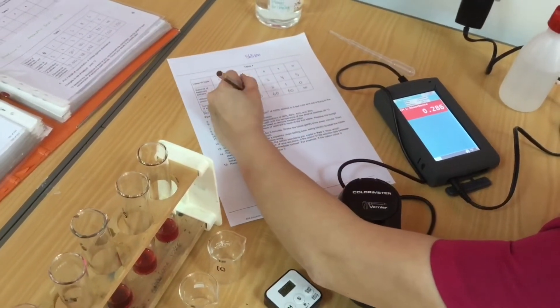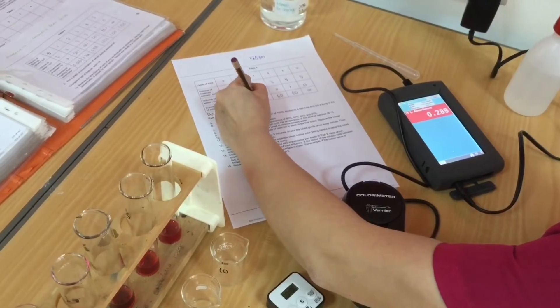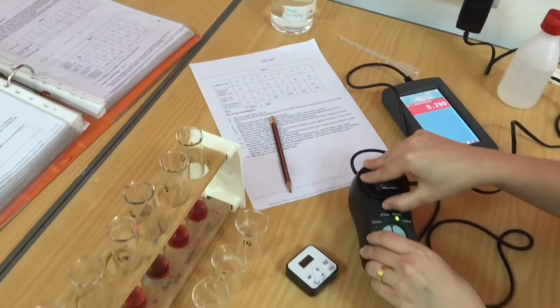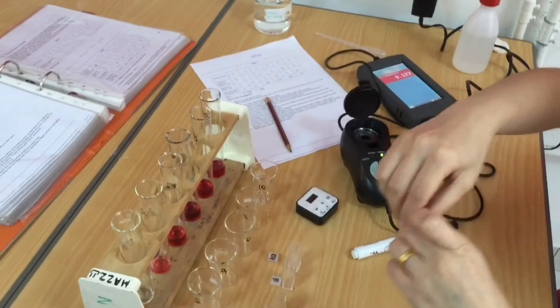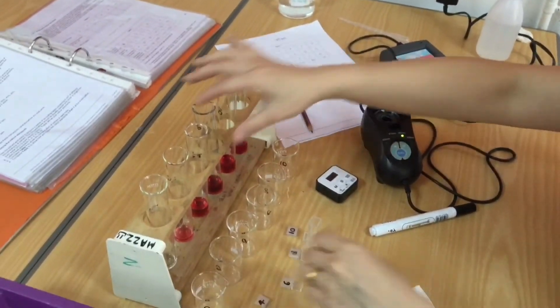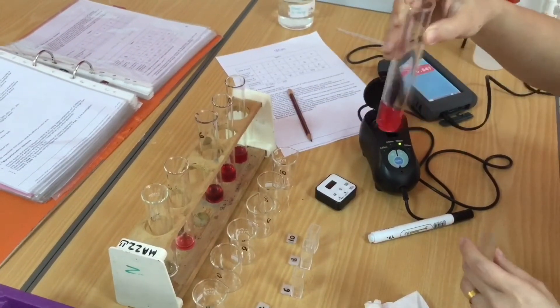So write that down, that's .286. Put that into the table. Then we just lift the lid to remove that and put it back in place so we can keep track of where we are.